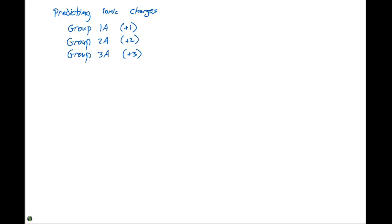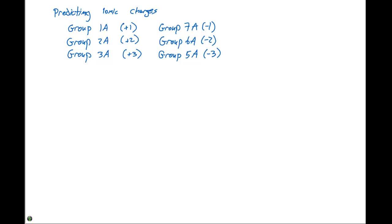If we now look at Group 7A, they have a minus 1 charge. Group 6A has a minus 2 charge. And Group 5A has a minus 3 charge. In Group 6A there's an exception, and the exception here is peroxides, which will have a minus 1 charge.